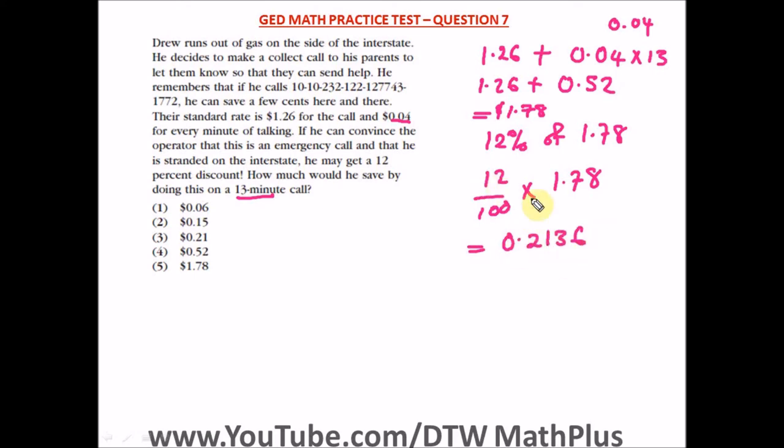So he's going to save this amount, that's 12% of $1.78. This is the amount he's going to save, and we need to approximate this. In approximating this, this is in dollars, so that's like two decimal places.